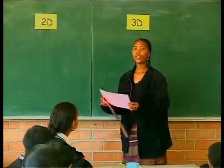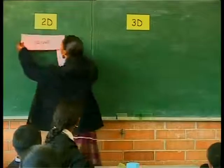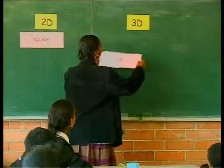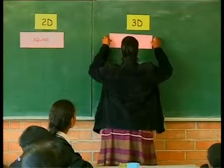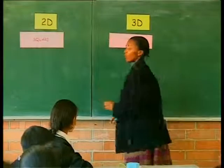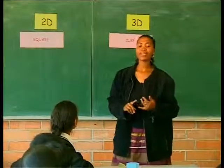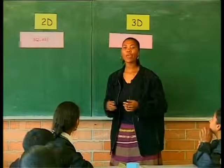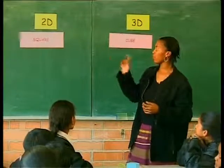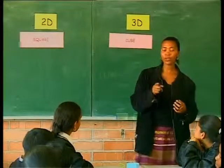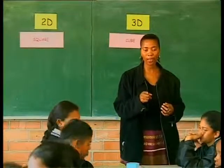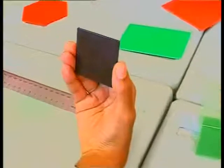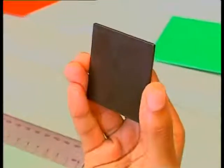I want you to focus on the 2D square and the 3D cube. You are going to tell me the similarities between these two shapes and also the differences between these two shapes. Have a look at your square and your cube and give me all the similarities and all the differences.